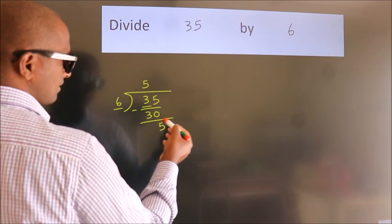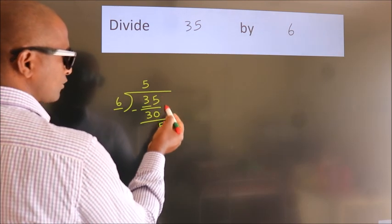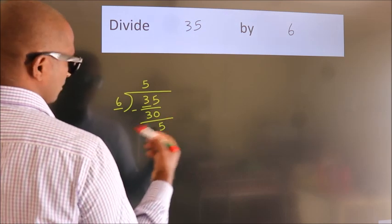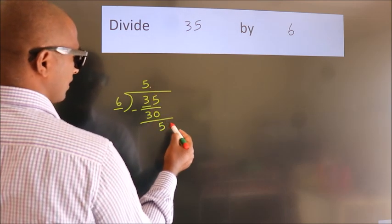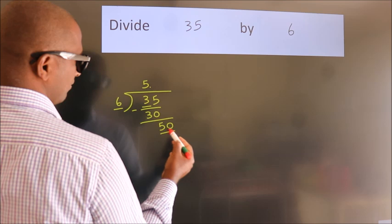After this, no more numbers to bring down. So what we do is we put a dot and take 0. So 50.